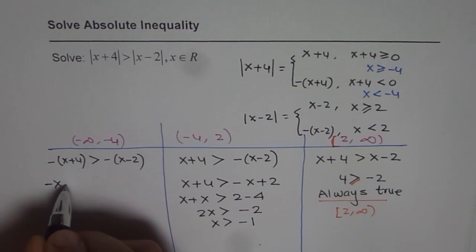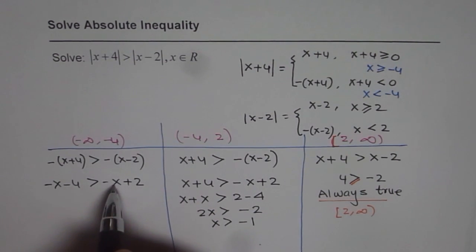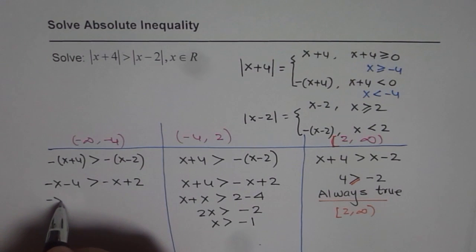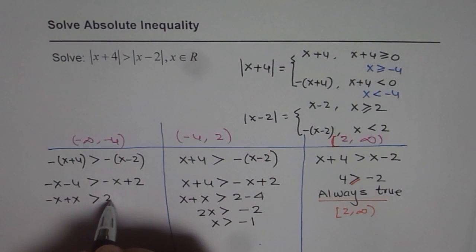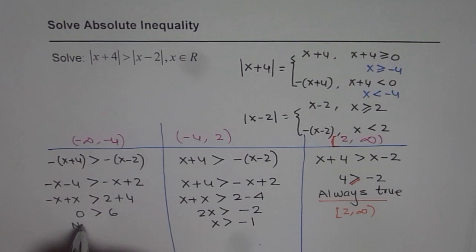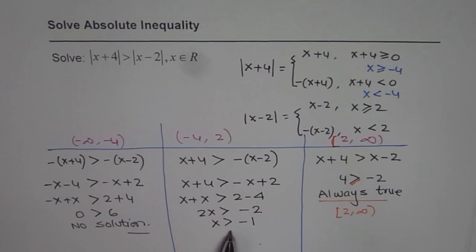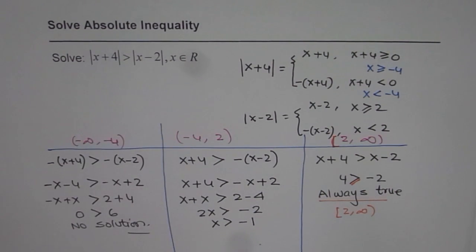For the interval x less than minus 4, expanding gives minus x minus 4 greater than minus x plus 2. Bringing the x terms together gives 0 is greater than 6, which is not correct — so there is no solution in this interval. Combining results from all three intervals, the overall solution is that x must be greater than minus 1.